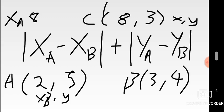Similarly, the y coordinate from your position location (point C) becomes y_a, which is 3. The rule is: values with the 'a' subscript come from the location you're positioning yourself at, while values with the 'b' subscript come from the points you'll be supplying. So for point A's coordinates (2, 5), the y value of 5 becomes y_b.